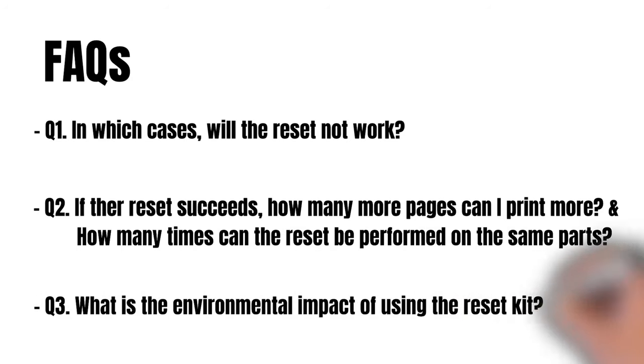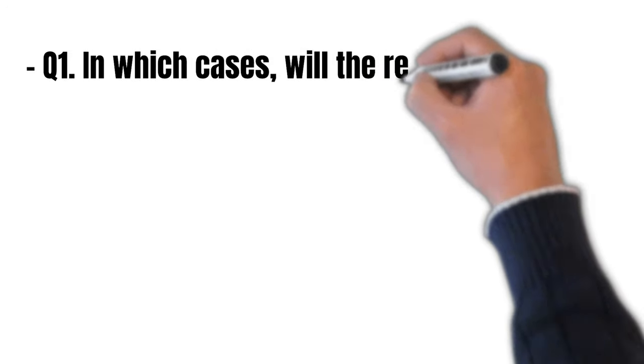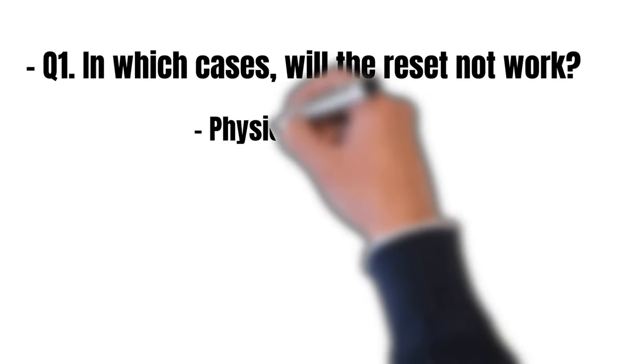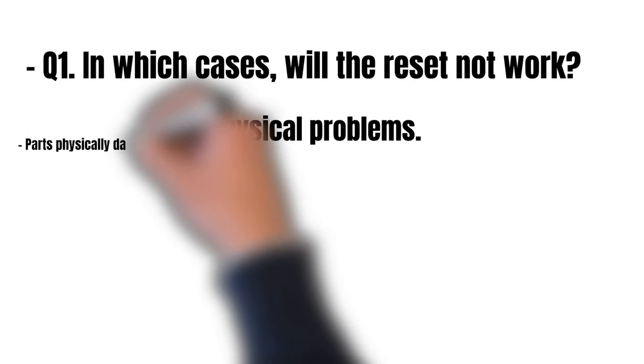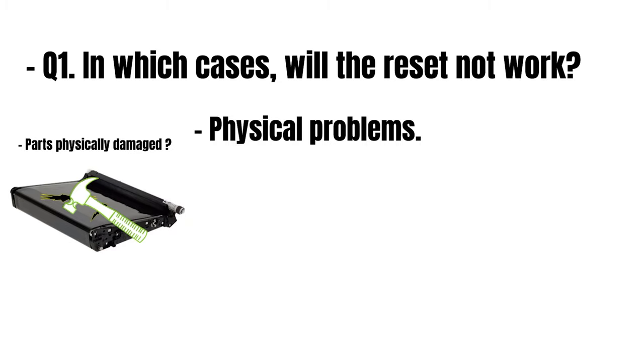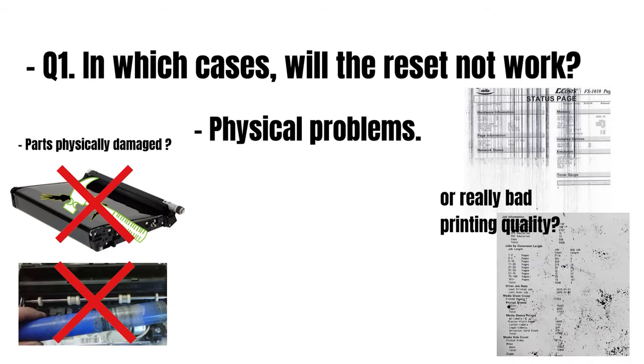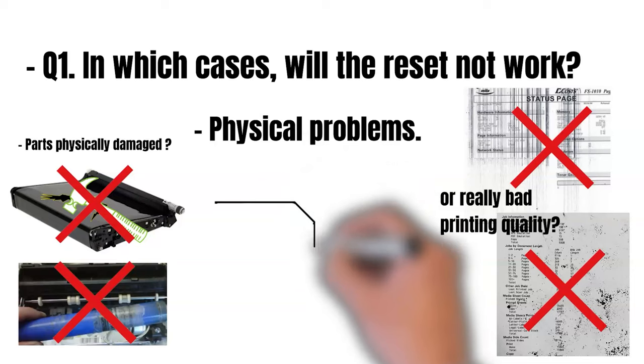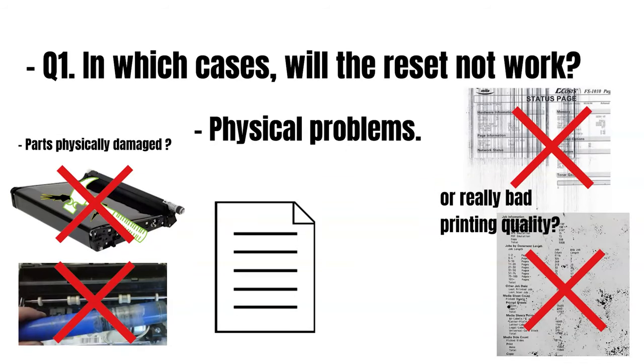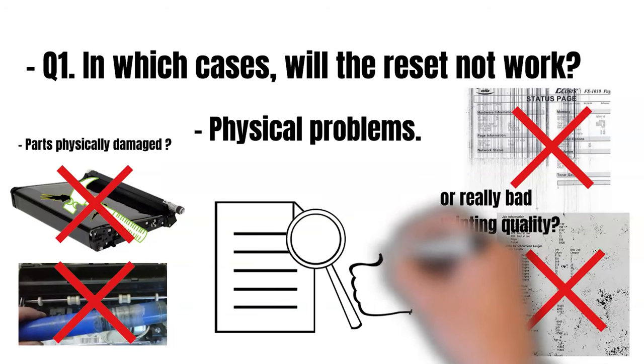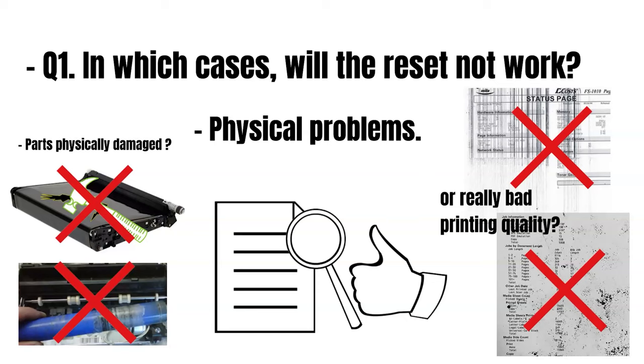Firstly, the page counter reset affects only the page count number and the replace part message, but it does not address physical problems. If your printer has printing defects caused by maintenance parts, a page counter reset cannot resolve the issue. In such cases, if you are not happy with the printing quality, the part itself requires replacement. Before applying reset kits, assess the current printing quality. If the printer stopped due to the page counter issue, evaluate the very last print's quality before it stopped. If the quality is acceptable, you can reset the part and continue using it.